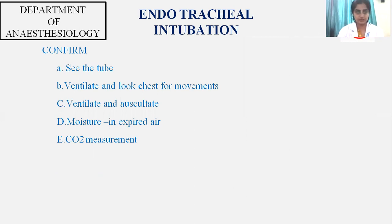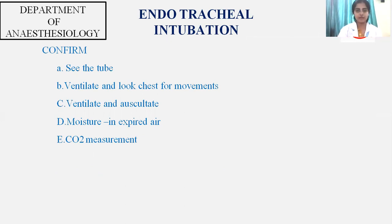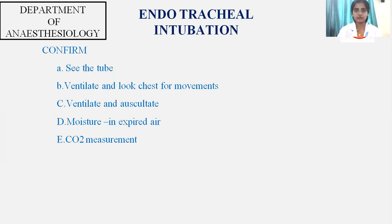Once you have intubated the patient, confirm correct placement. First, visually confirm the tube passing through the laryngeal inlet. Then attach the circuit to the ventilator, ventilate the patient, and look for bilateral chest movements. Check for moisture in the expired air over the endotracheal tube. The most confirming method is capnographic monitoring, which confirms the endotracheal tube is in the trachea.